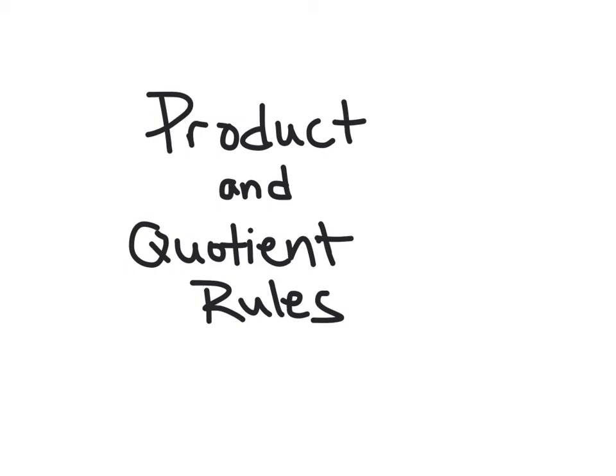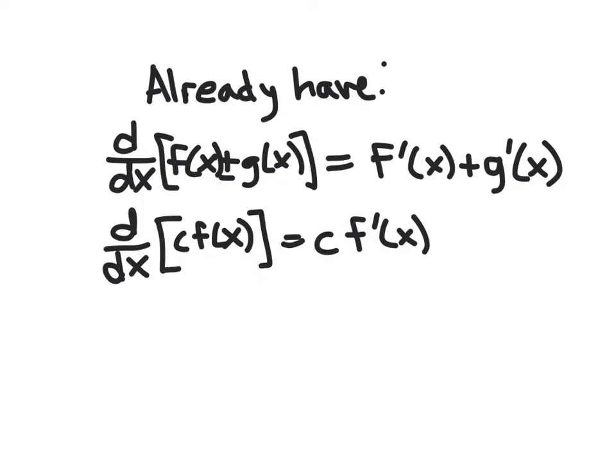We are now ready to get some more shortcuts in terms of calculating derivatives. This video will talk about the product and quotient rules. We've already seen this for sums, differences, and scalars — the derivative of a sum or difference is the sum or difference of the derivatives, and multiplying by a scalar then taking the derivative is the same as taking the derivative first and then multiplying by the scalar.